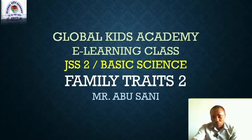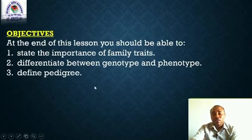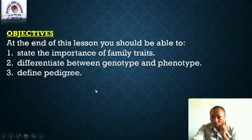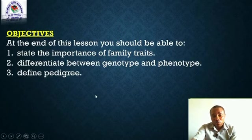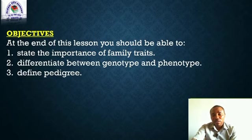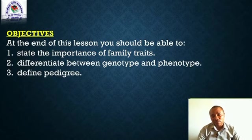I want us to look at the objectives of this lesson. At the end of this lesson, you should be able to: 1. State the importance of family traits. 2. Differentiate between genotype and phenotype. 3. Define pedigree. These are the objectives of this lesson.